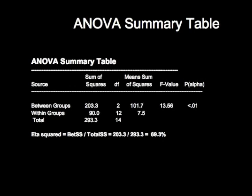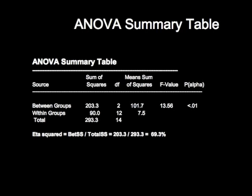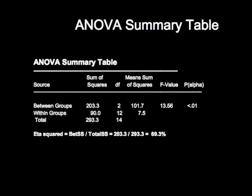The results of an analysis of variance are often summarized in what's called an ANOVA summary table. This table represents several bits of information. It provides the source of that variation, which is either between group variation or within group variation, or the total variation. It gives you in the second column the sum of squares, which is the total sum of squares or between group, within group, at total variation.